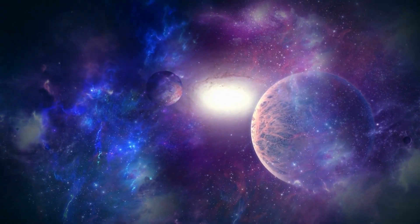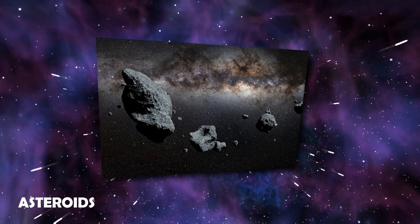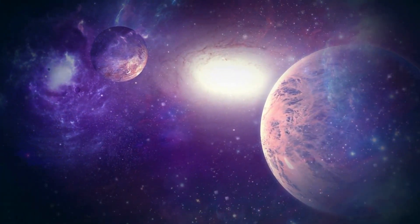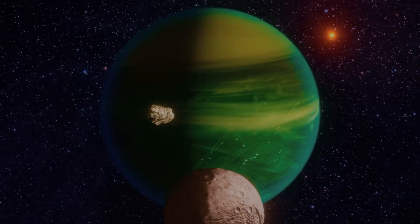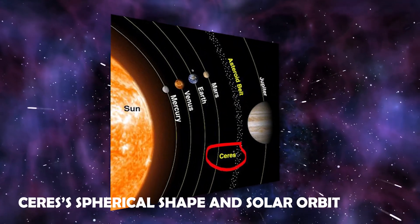However, even this particular set of criteria is not unanimously accepted by everybody. Despite the vast size of the asteroids, Earth and even Jupiter have not eliminated a significant number of them from their orbital zones. In addition, there are certain minor worlds that do not qualify as planets despite having characteristics of planets, such as Ceres' spherical shape and solar orbit.